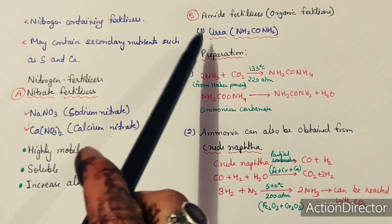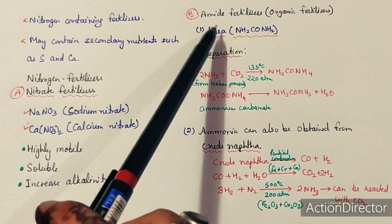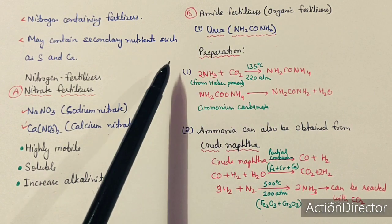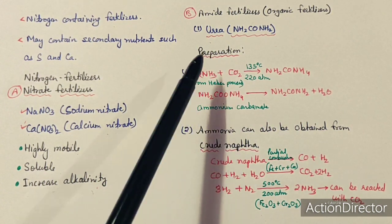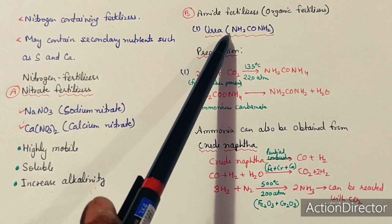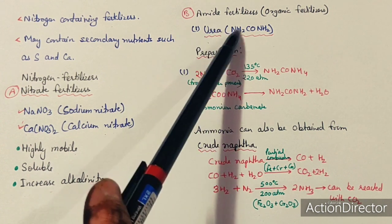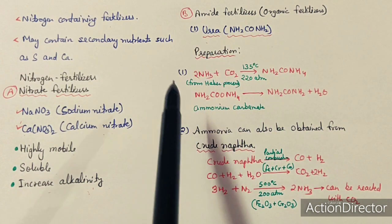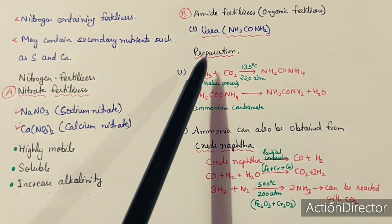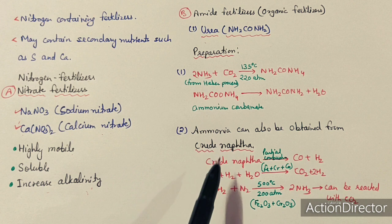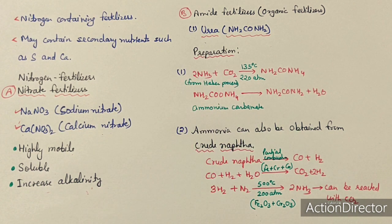The second group of nitrogen fertilizers is amide fertilizers. Although these are technically organic fertilizers — because they are organic compounds — they provide nitrogen to the soil. Amide fertilizers are not inorganic fertilizers but are part of organic fertilizers, though they can be synthesized. We study them here because we are covering nitrogen fertilizers broadly, which include both inorganic and organic nitrogen sources.